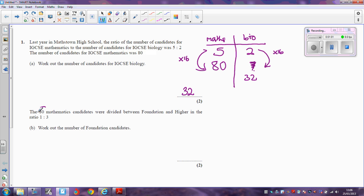Part B is slightly different because it takes the 80 maths candidates and divides them between foundation and higher in the ratio 1 to 3. So effectively, we're going to divide 80 in the ratio 1 to 3. First thing we need to do is 1 plus 3 to work out the total number of parts. 1 plus 3 is 4. If we do 80 divided by 4, that gives us 20.